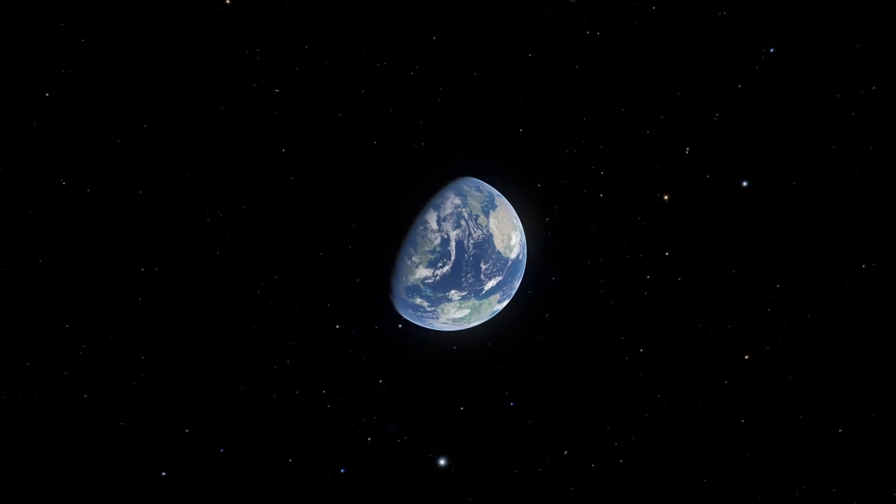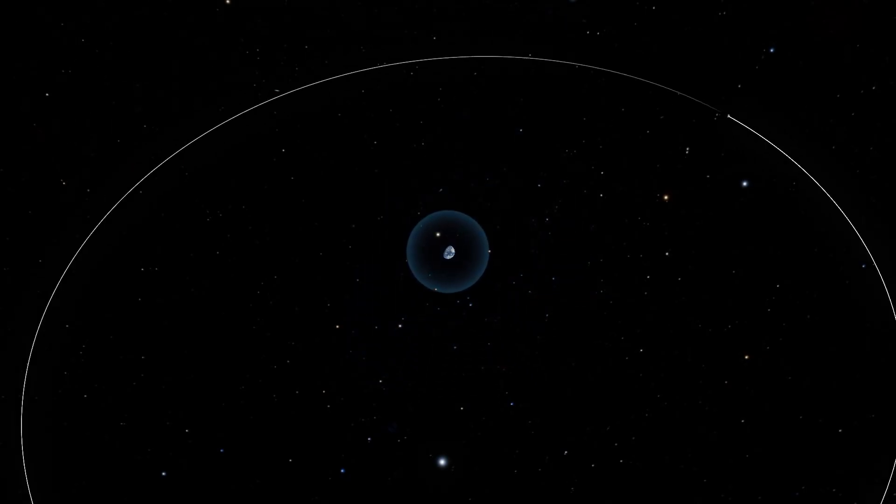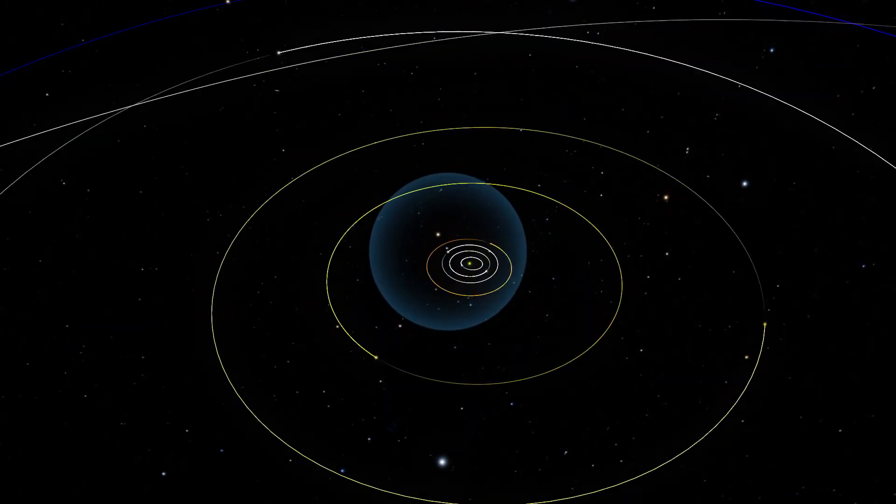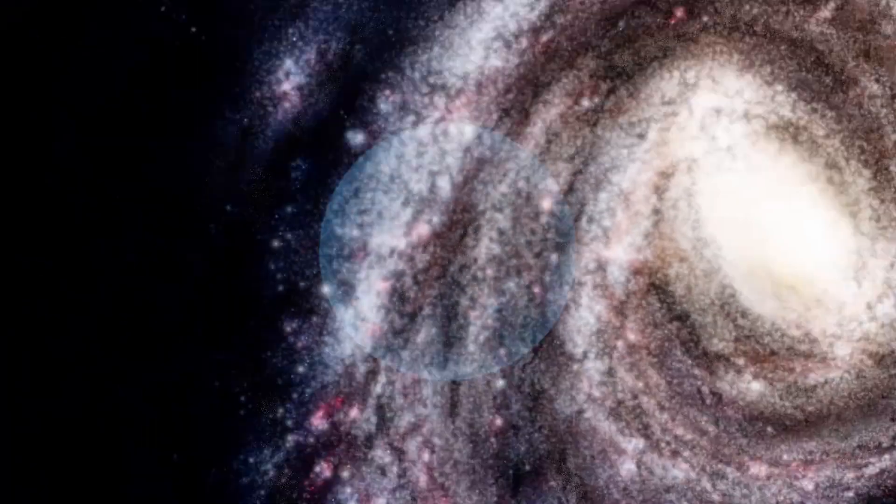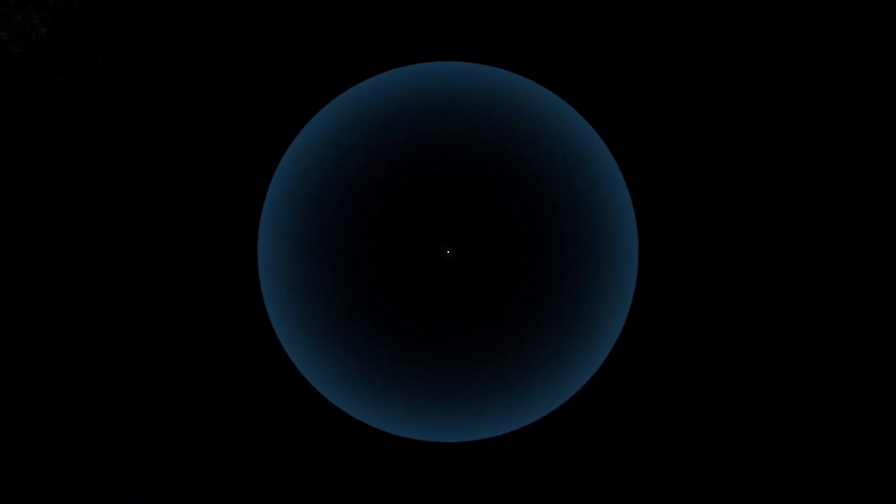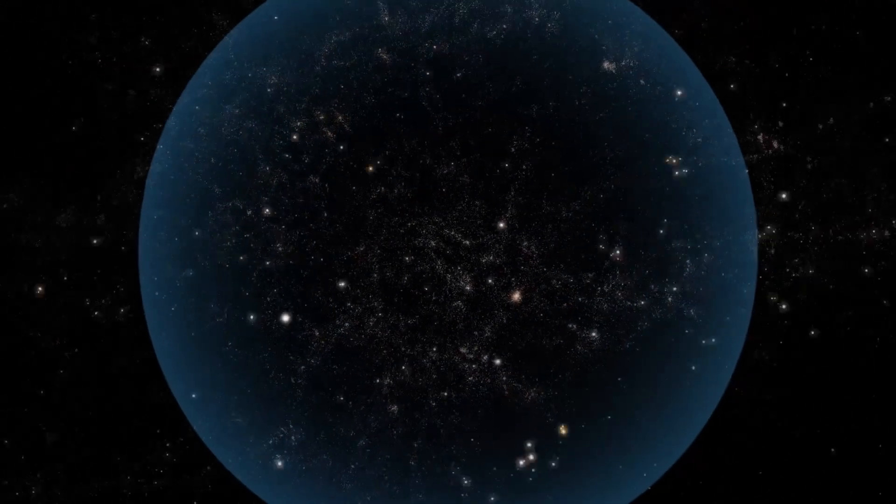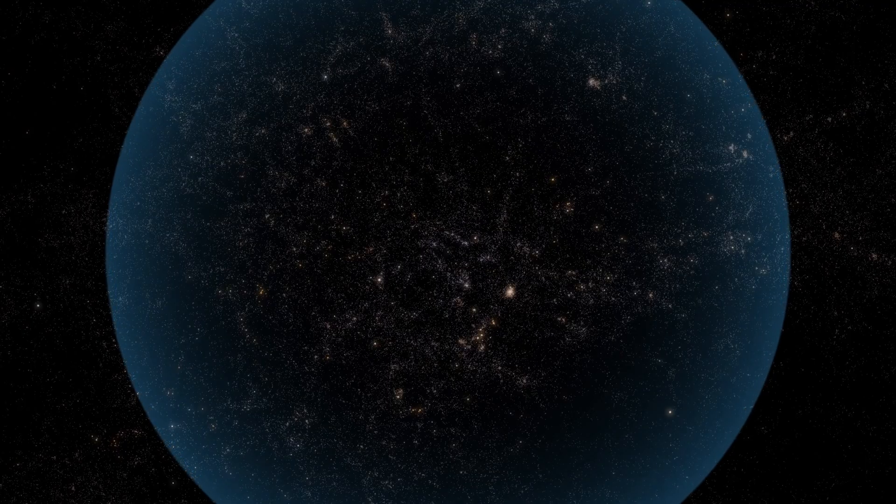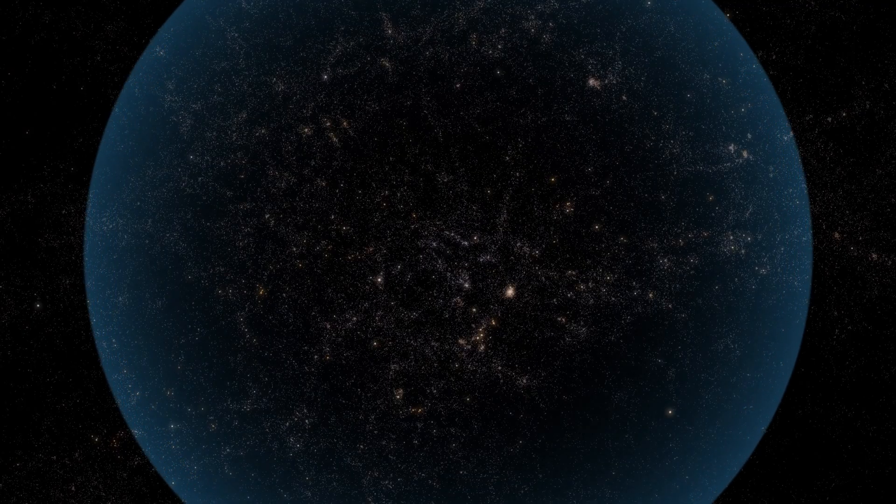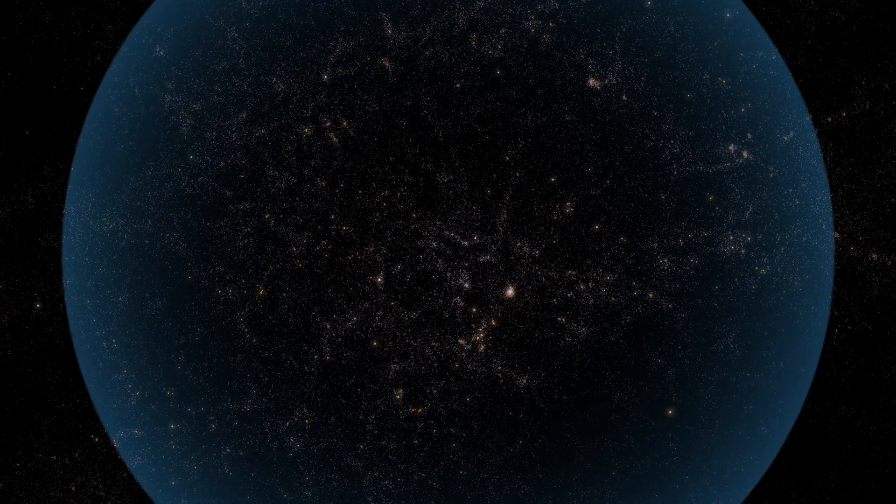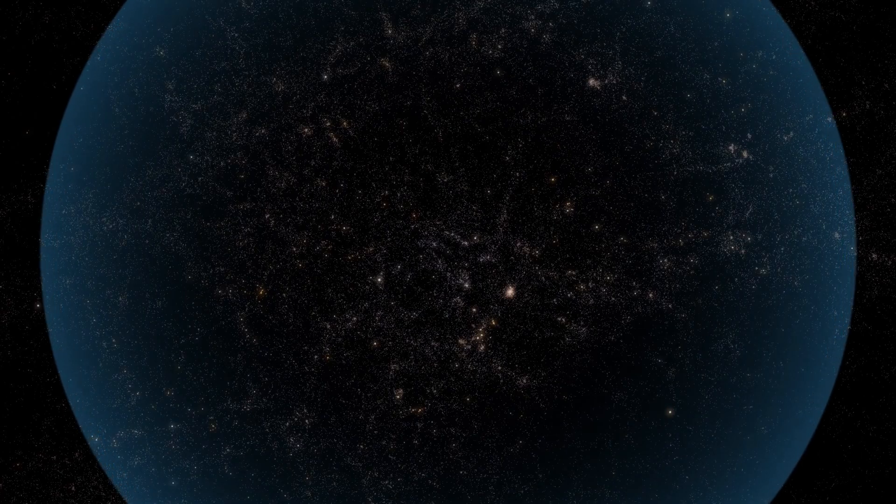These are only the galaxies within the so-called observable Universe. This consists of all objects that can in principle be observed with telescopes like Hubble, those from which light has had time to reach us since the beginning of the Universe. Beyond this limit, known as the cosmological horizon, the Universe continues. Just how far it goes is yet an unanswered question.